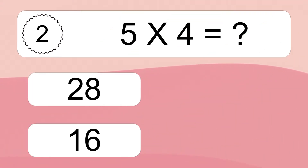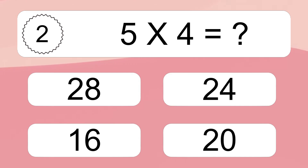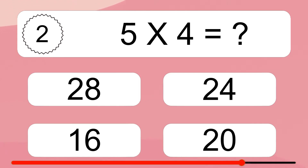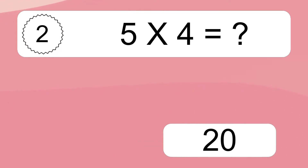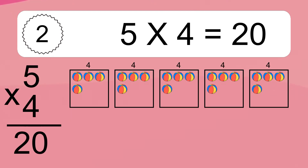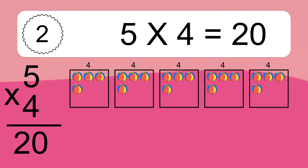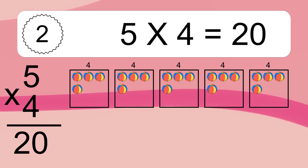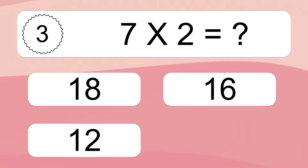5 times 4 equals what? 5 times 4 equals 20. We have 5 boxes, and each box has 4 colorful balls inside. If you count all the balls in all the boxes together, you will have 5 times 4 balls. This equals 20 balls.